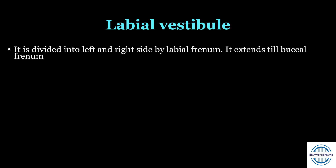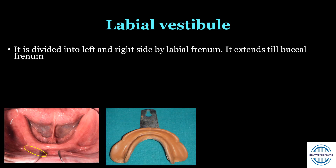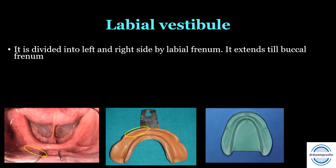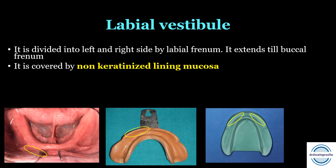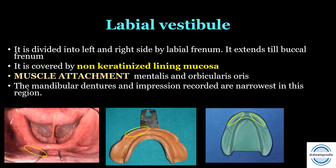Second is the labial vestibule. It is divided into right and left sides by the labial frenum and extends to the buccal frenum. It is recorded as labial flange in the impression. It is mainly covered by non-keratinized lining mucosa. The muscle attachments are mentalis and orbicularis oris. The mandibular denture impression is recorded as narrowest in this region — this is one of the wider questions asked in exams.